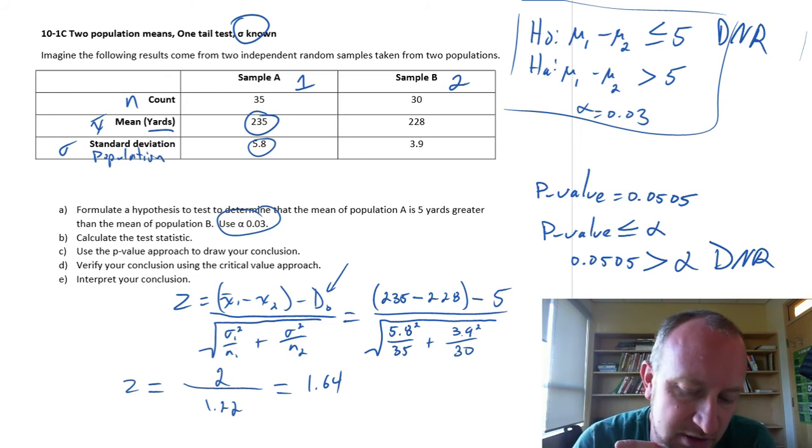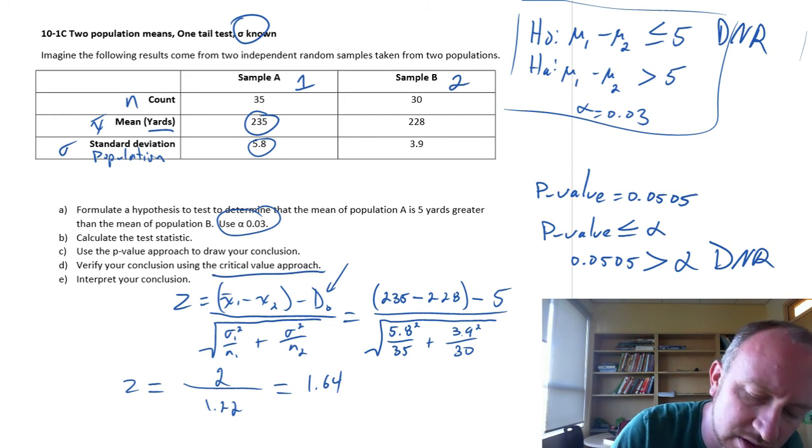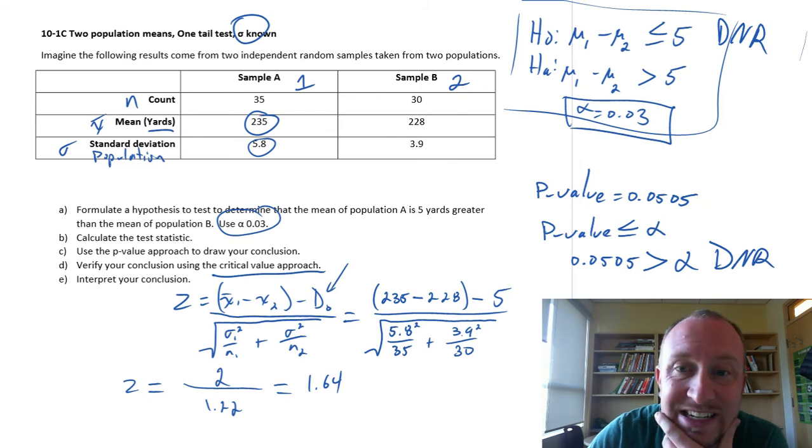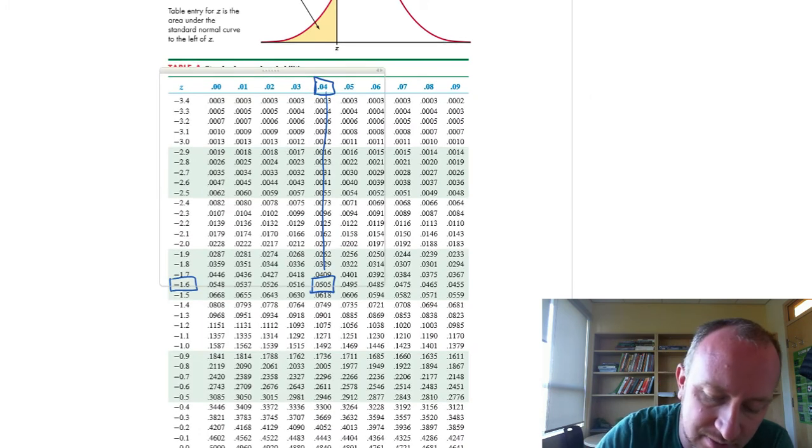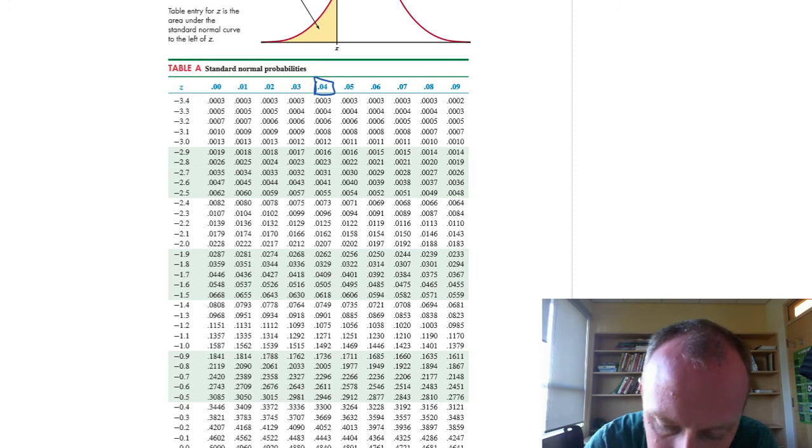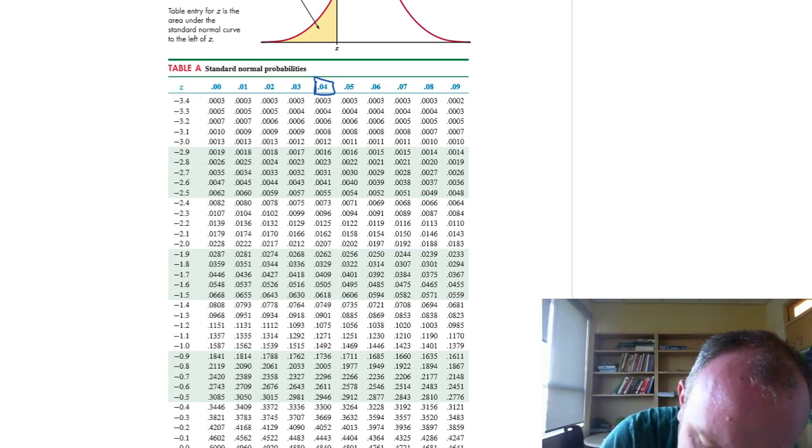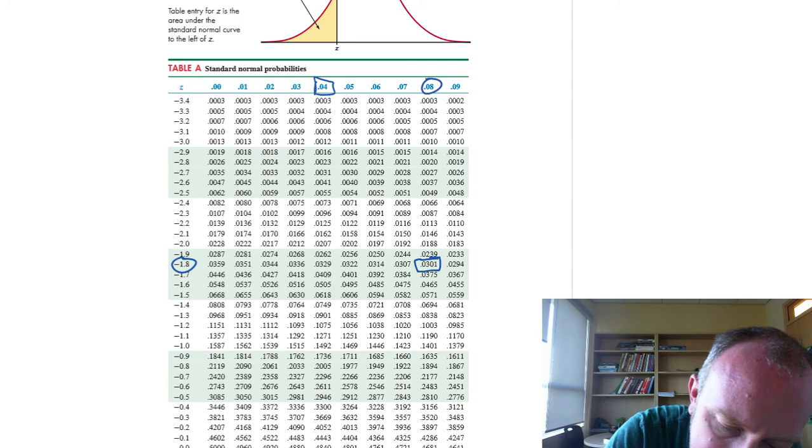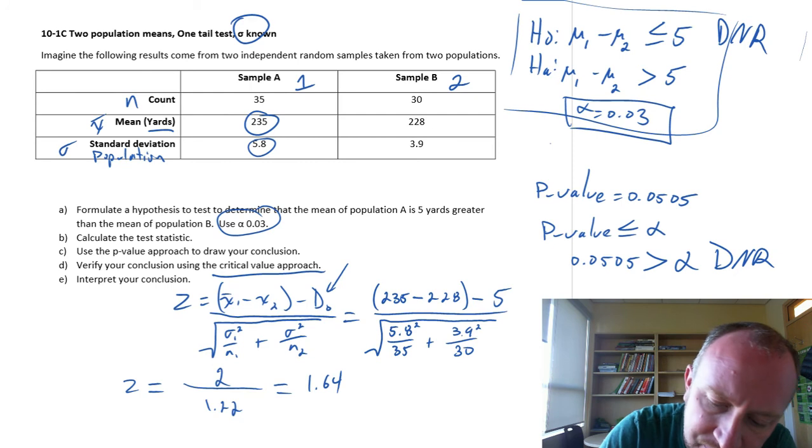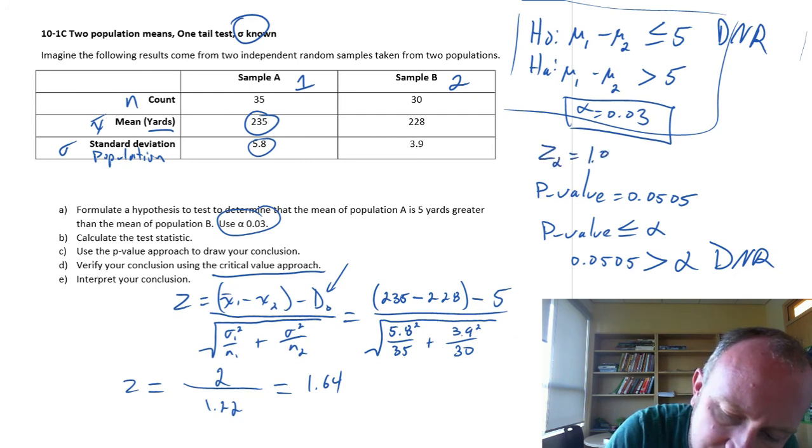So what's our critical value approach? Our critical value that relates to our alpha of 0.03. So if we go back down to our tables, and I'm looking in this body of probabilities, I want to find the value of 0.03. I think the closest we'll find, looks like right about there, is as close as we'll get. So that's going to be 1.88 is our critical value. So z alpha is 1.88.